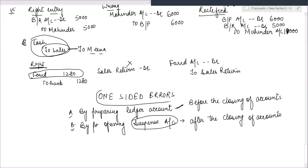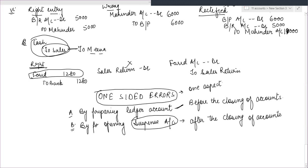So, one-sided errors are those errors which affect one account and one aspect only. These can be rectified by preparing ledger accounts or by opening a suspense account. When we open the suspense account, we rectify it from the journal entry.